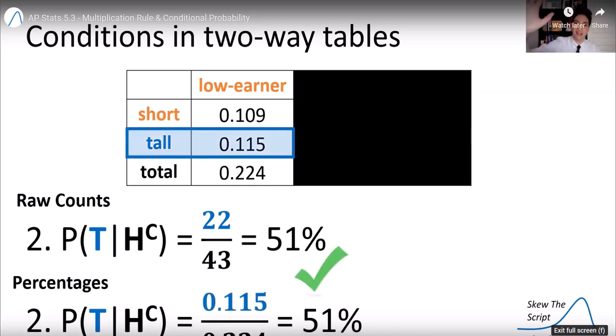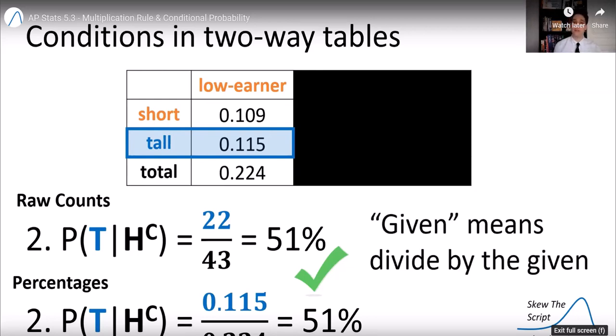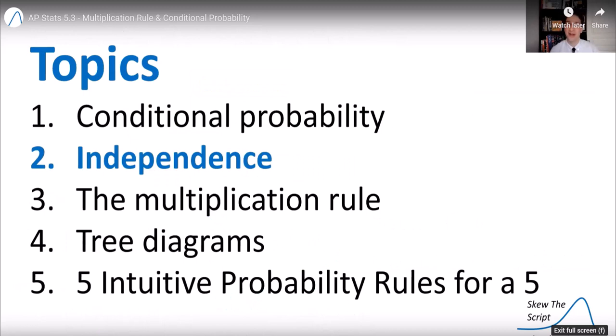we again ignore everyone who is not a, who is a high-income earner. And we divide the tall probability by the given. And when we do that, we get the exact same percentage. So even those decimals don't get freaked out. Again, divide by the given and use the event intersection as the numerator. So again, given means divide by the given. That will get you anywhere in givens.